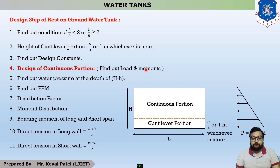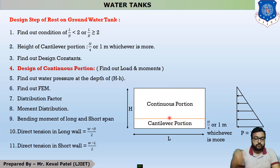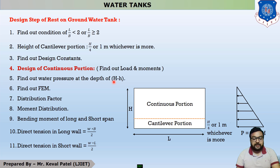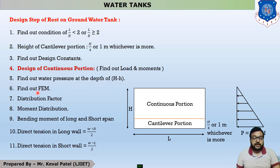First, we find out the water pressure, because we are designing only the continuous portion. The maximum pressure is at the bottom of the continuous portion. We find the height (H − h) and calculate the water pressure at that point. Then we find the FEM — Fixed End Moment.